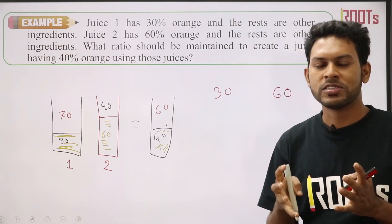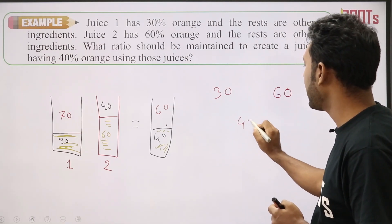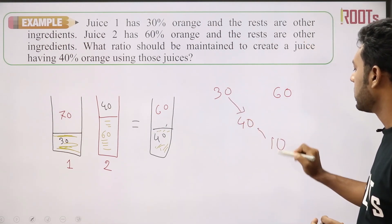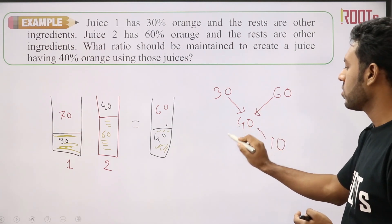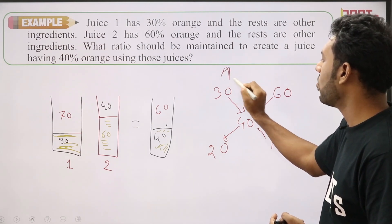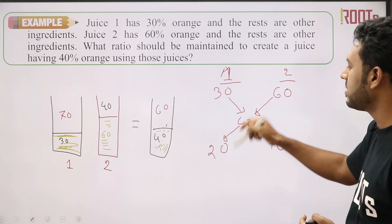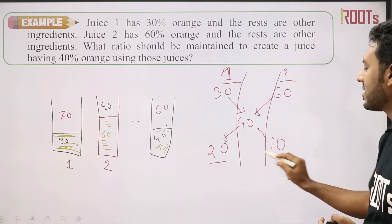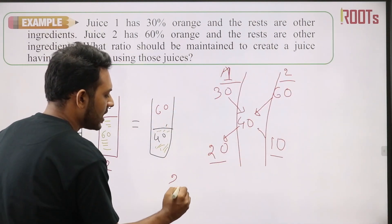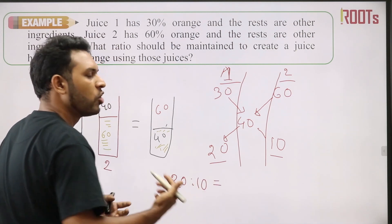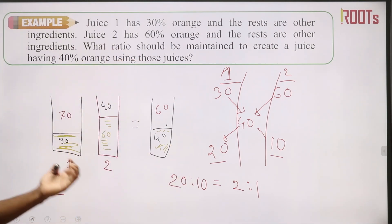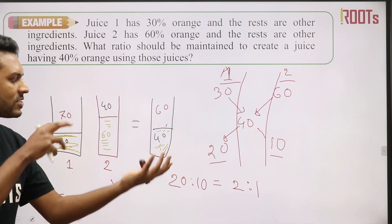Take the differences: 30 to 40 gives 10, and 60 to 40 gives 20. The answer is 20 to 10, which simplifies to 2 to 1. So you mix Juice 1 and Juice 2 in the ratio 2 to 1.